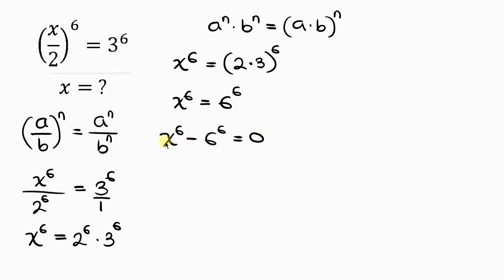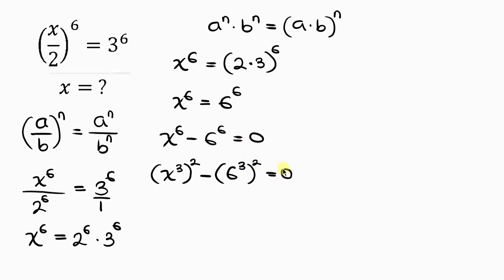We can rewrite x to the 6 as (x cubed) raised to the power of 2, and 6 to the 6 as (6 cubed) raised to the power of 2, giving (x cubed) squared minus (6 cubed) squared equals 0. The reason we do this is that from indices, powers multiply: 3 times 2 gives back 6.